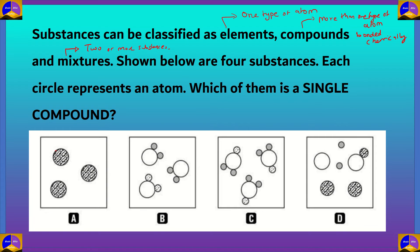Looking at the definition, this type matches with an element, since an element is made up of one type of atom. Option A is made up of one type of atom, so option A is an element — it's not a single compound. So option A is incorrect.